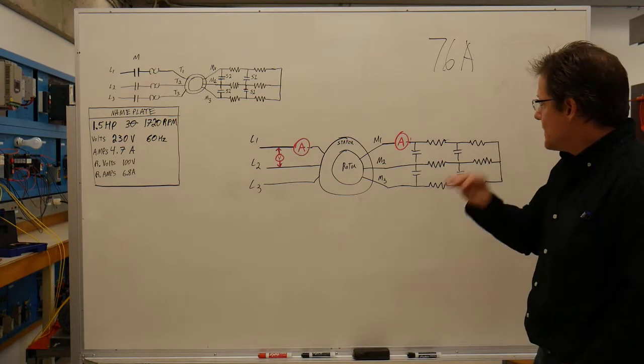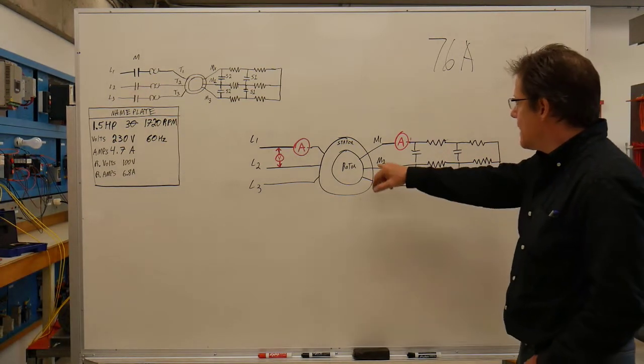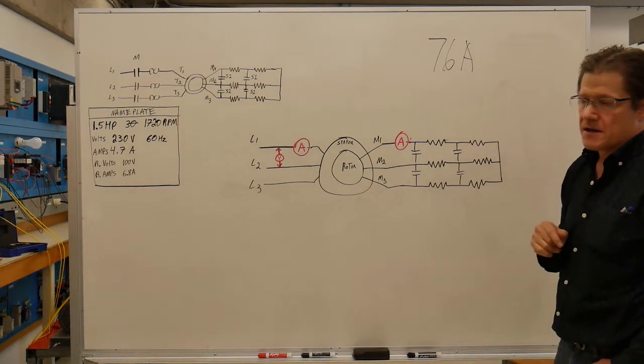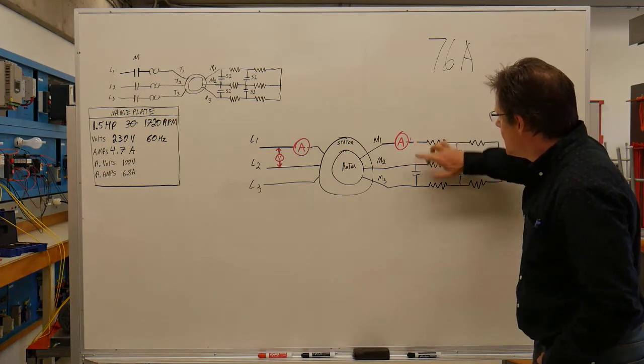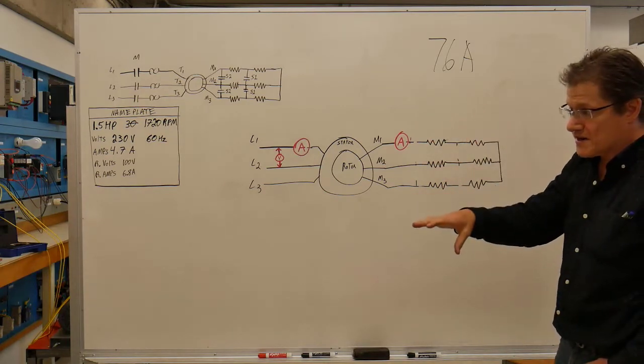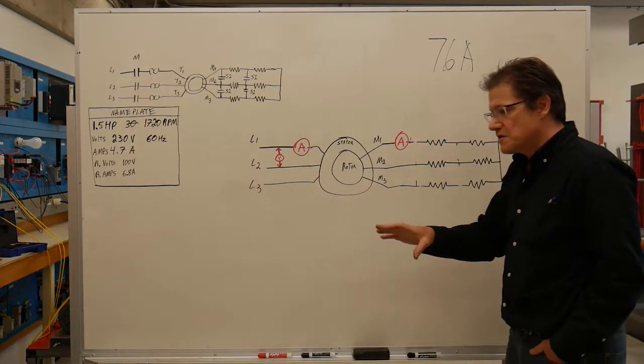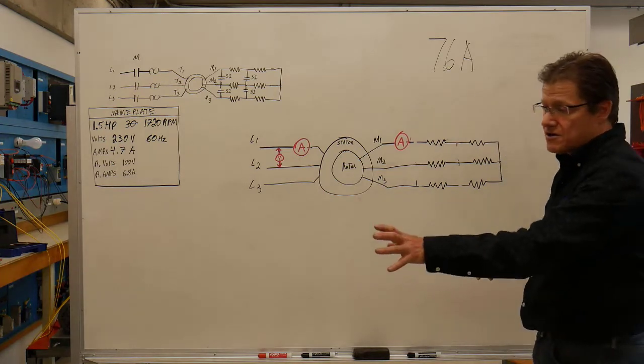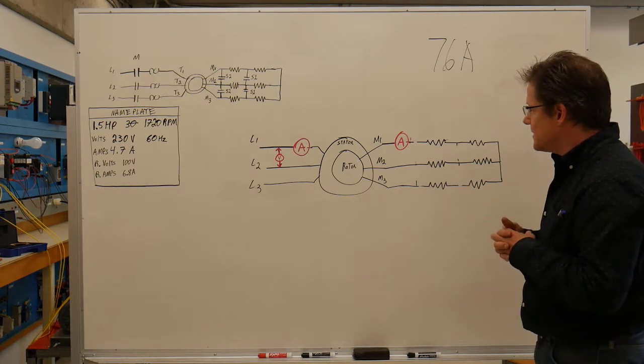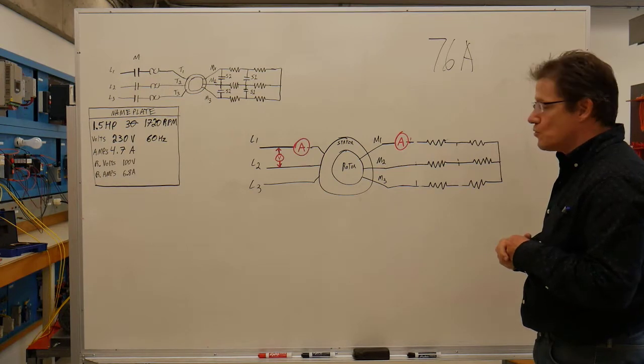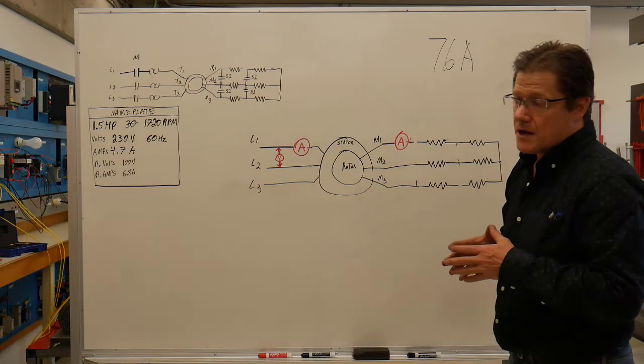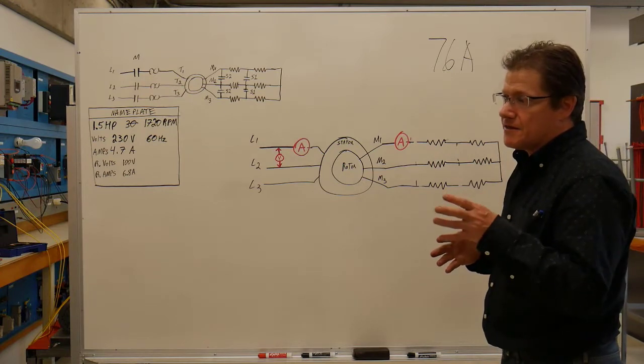Now we've looked at it shorted out and open. We're going to start the wound rotor with all the resistance in the circuit without engaging the bypass contactors. There's not much torque on it, so once it overcomes the flywheel, it'll get up to a decent speed, but not full speed. We'll see how the rotor volts and frequency change as it accelerates.